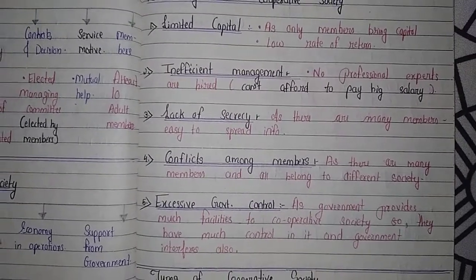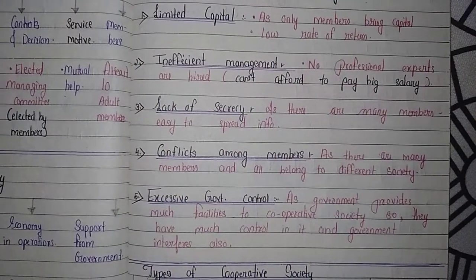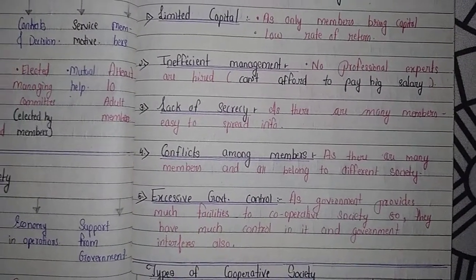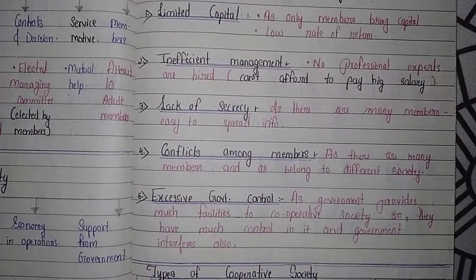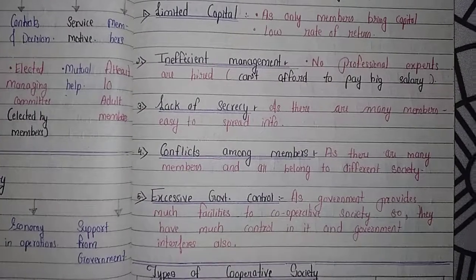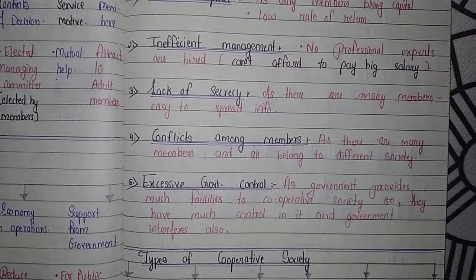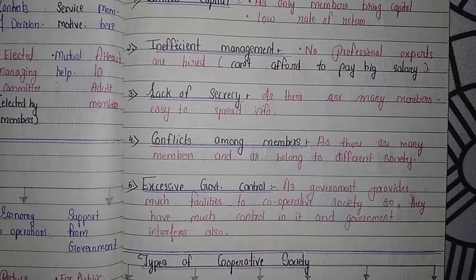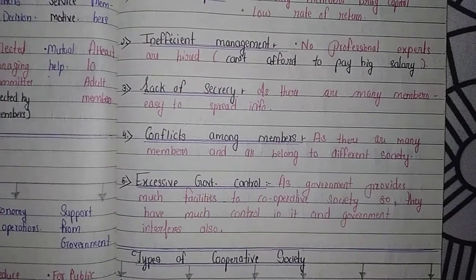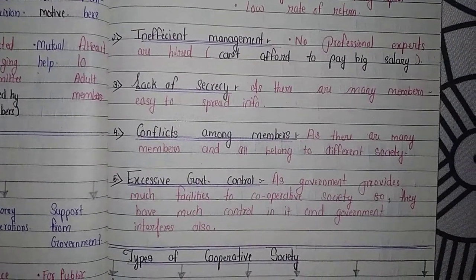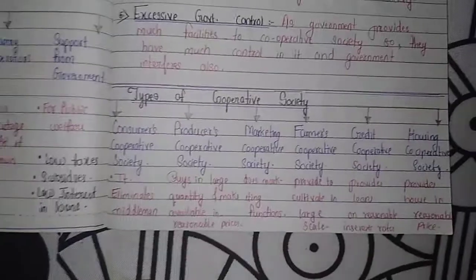The fourth disadvantage is lack of secrecy — as there are many members, information is easy to spread. Fifth is conflicts among members — as there are many members belonging to different backgrounds and cultures, there may be conflicts in decisions. Sixth is excessive government control — since the government provides many facilities and subsidies, it also interferes heavily in cooperative societies.